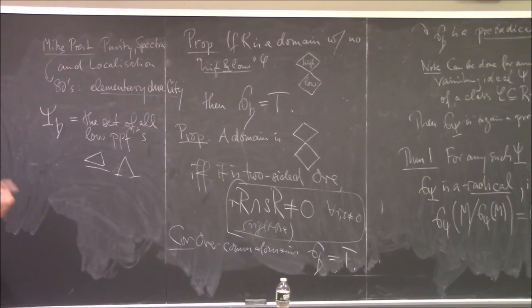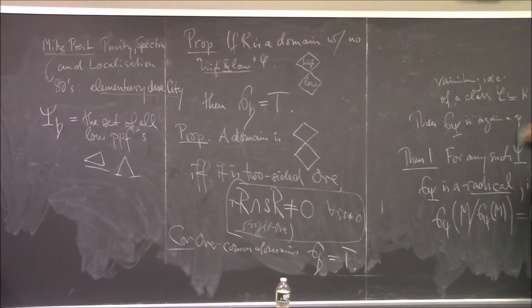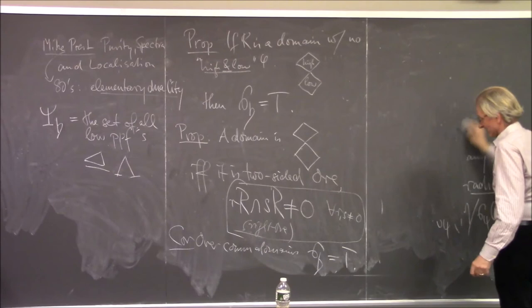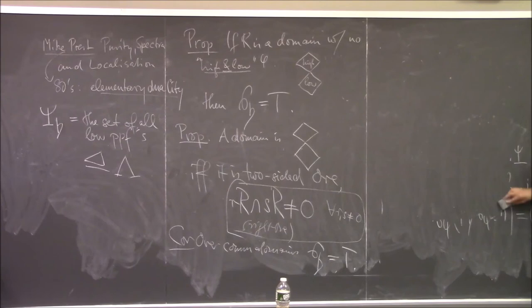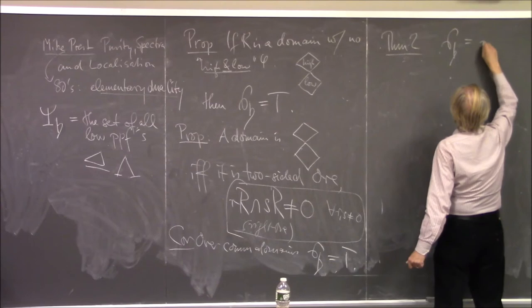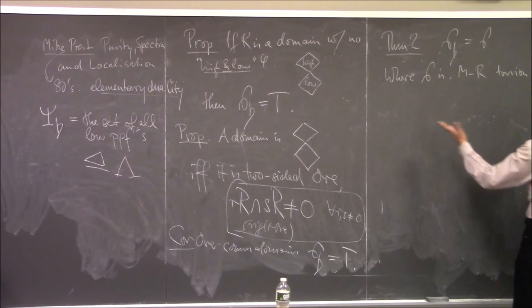Corollary: over commutative domains, the flat-vanishing torsion equals classical torsion. If you remember anything from Alex's talk, that was one of his theorems and actually one of the axioms he set out to satisfy: finding a torsion that coincides with classical torsion on commutative domains. So we're led to think that S_flat might be his torsion — and that's exactly what it is.